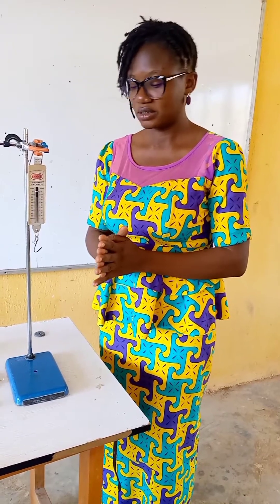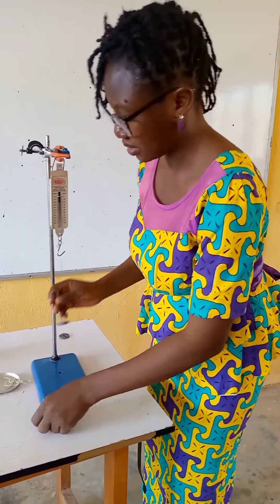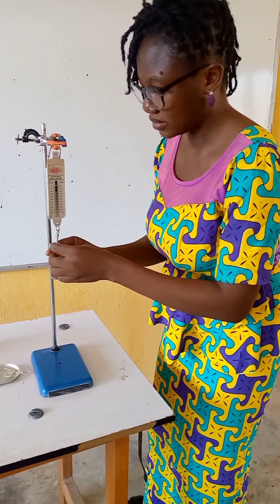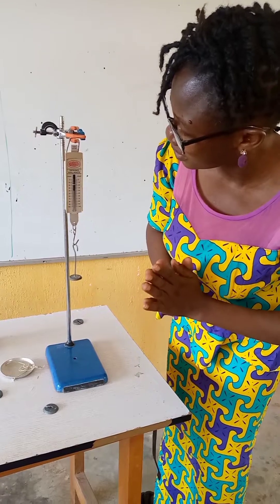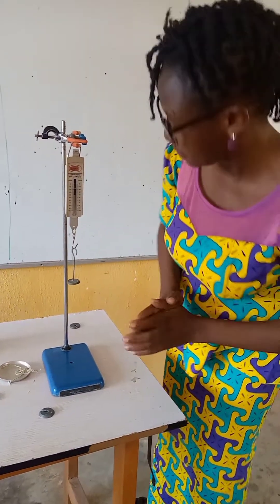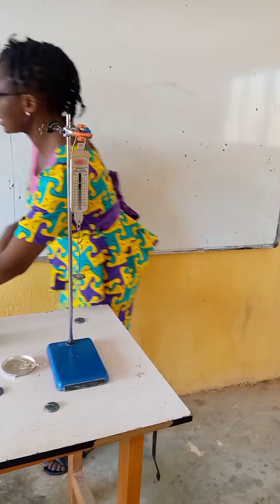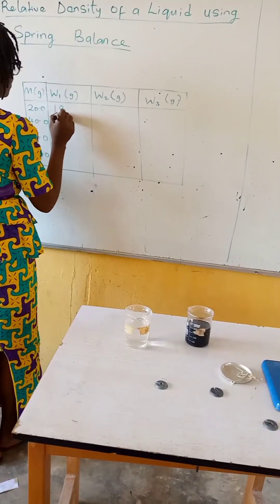Bear in mind that before you do it for the other fluid, you have to clean the masses properly. We will start with the measurement in air. For 20 grams, what I can read on my spiral spring is 19.5 grams. So we have 19.5.